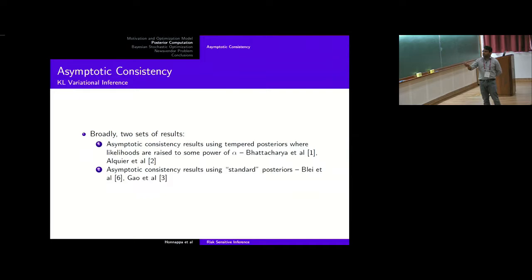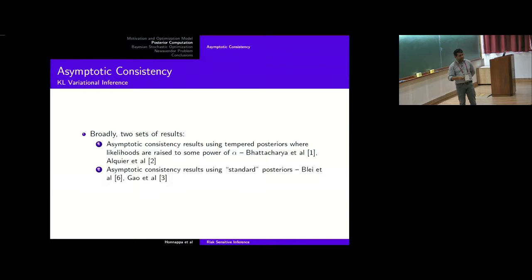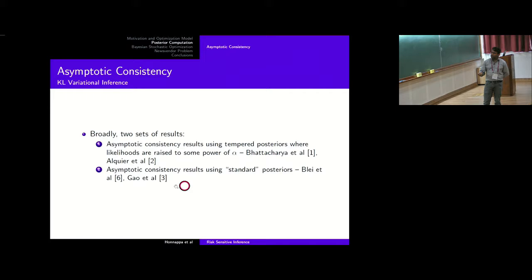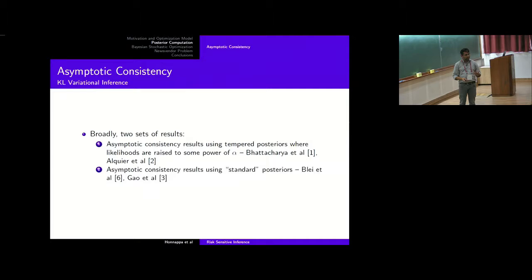The first method uses tempered posteriors, where you raise your likelihoods to some power alpha, making your analysis sensitive to tail effects of the likelihoods. This can be used to prove consistency in some cases — in fact, a paper by Alquier and his student proves consistency for mixture posteriors, whereas our results don't hold for mixtures. The other set of results, including the Wang and Blei 2017 paper, establishes asymptotic consistency without tempered posteriors, but requires a subtle construction of nice sequences of distributions. Our result falls into this second category.